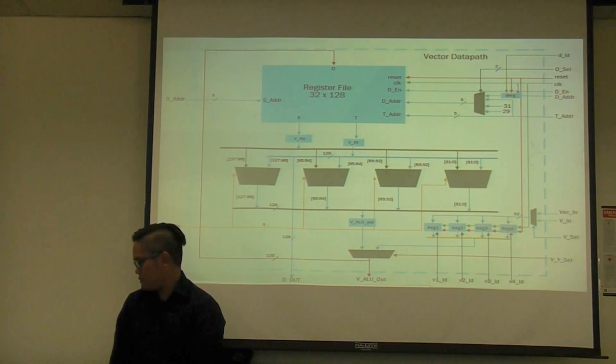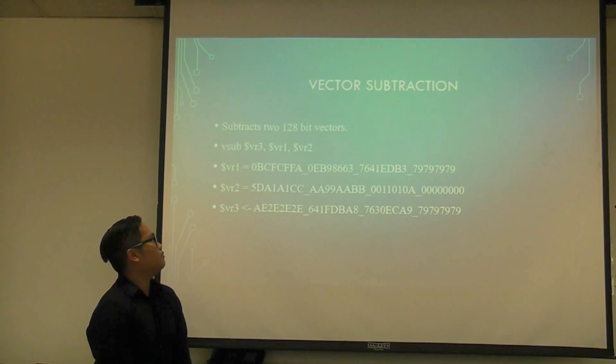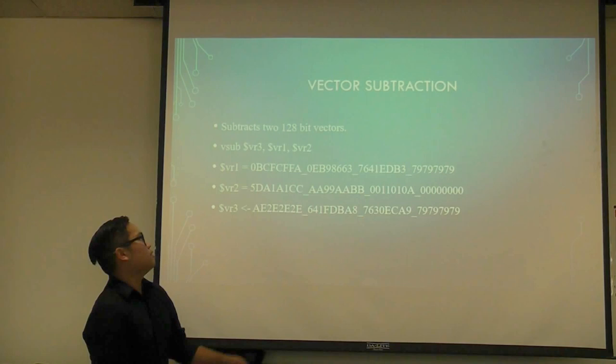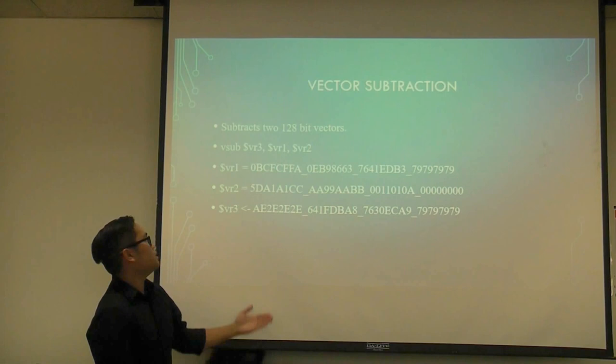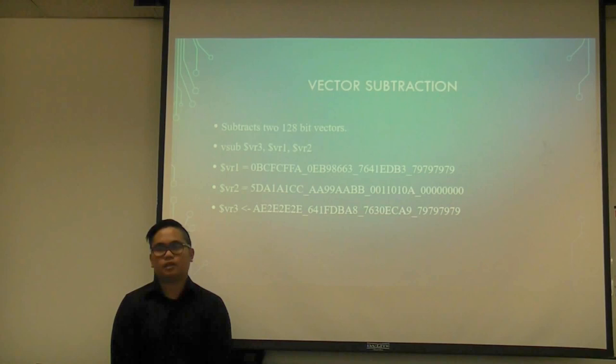Lastly, we have vector subtraction. In this case, we subtract two 128-bit vectors. Vector register one and two would have these values, and subtracted, it will get AE2E2E, stored back into the destination vector register. In the diagram, instead of addition, it will just be subtraction.